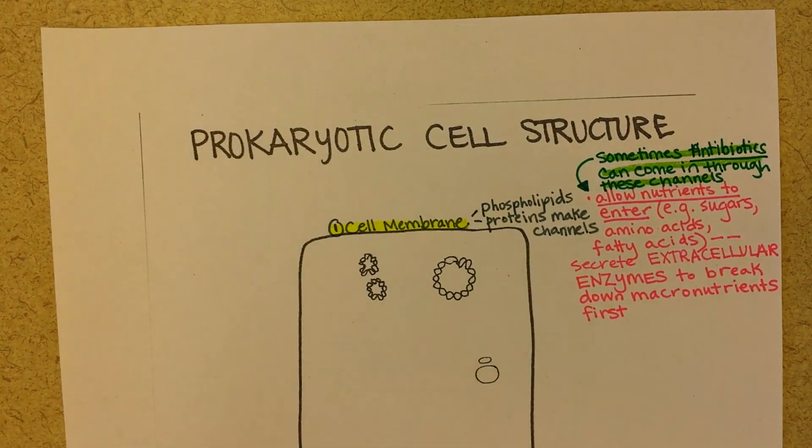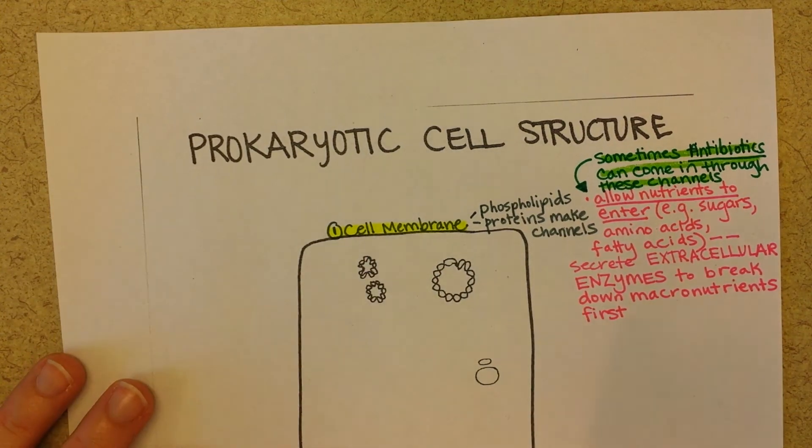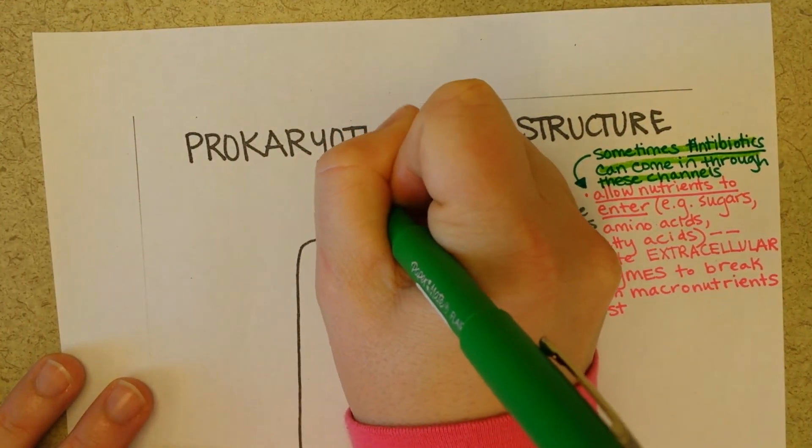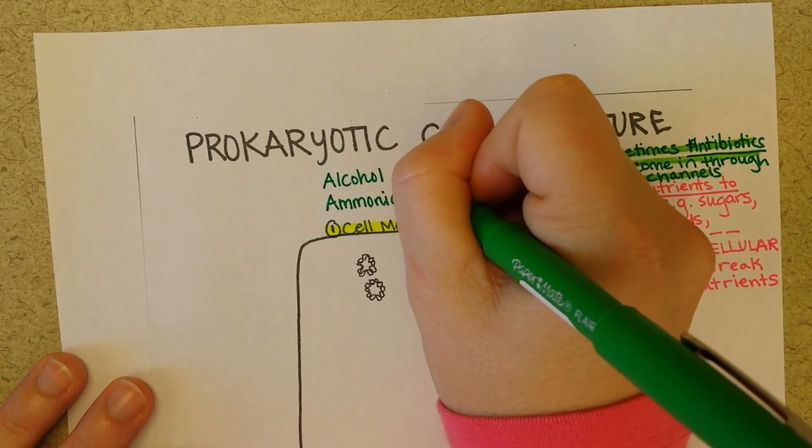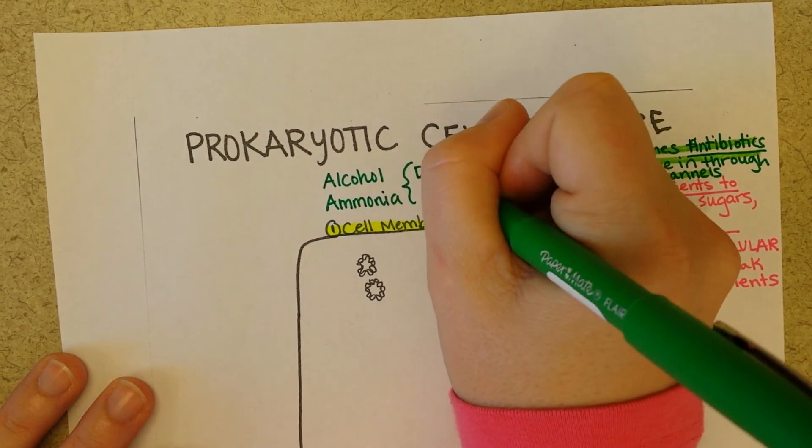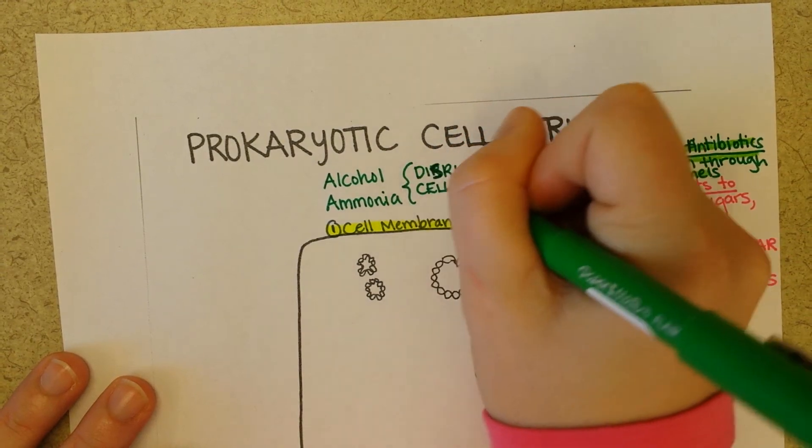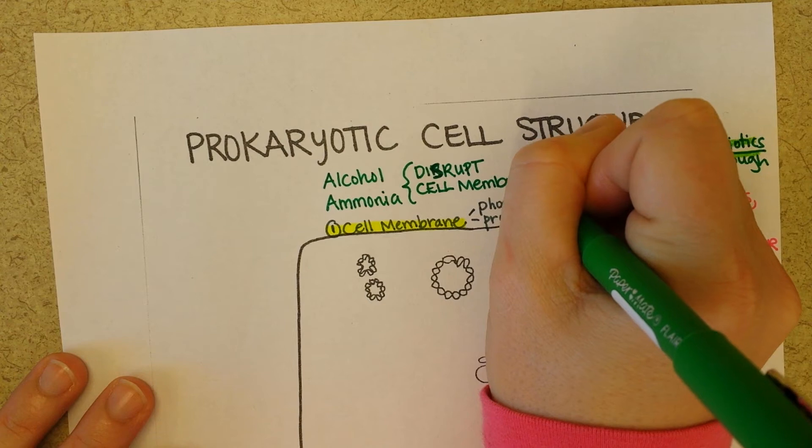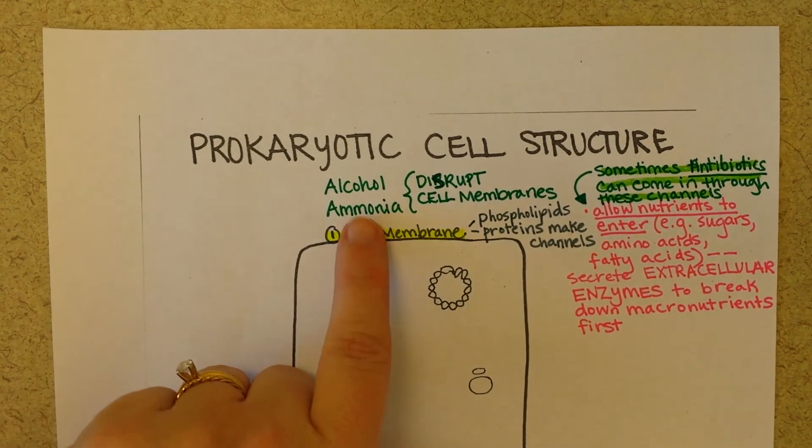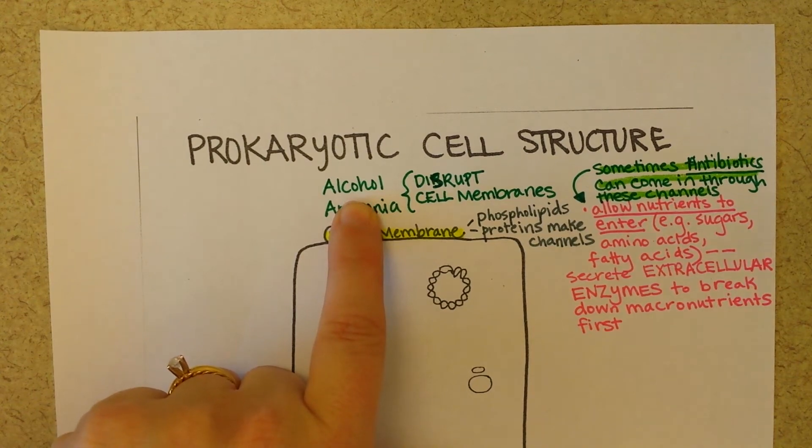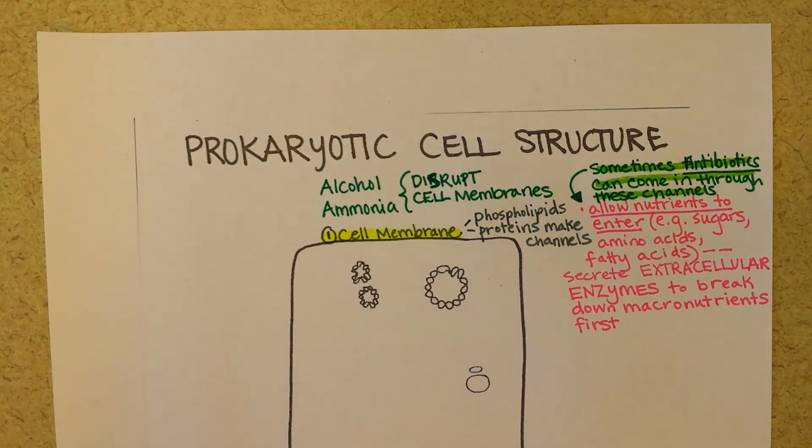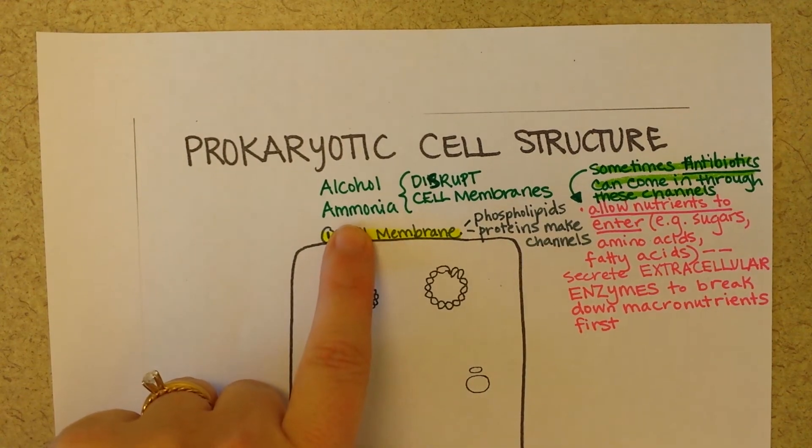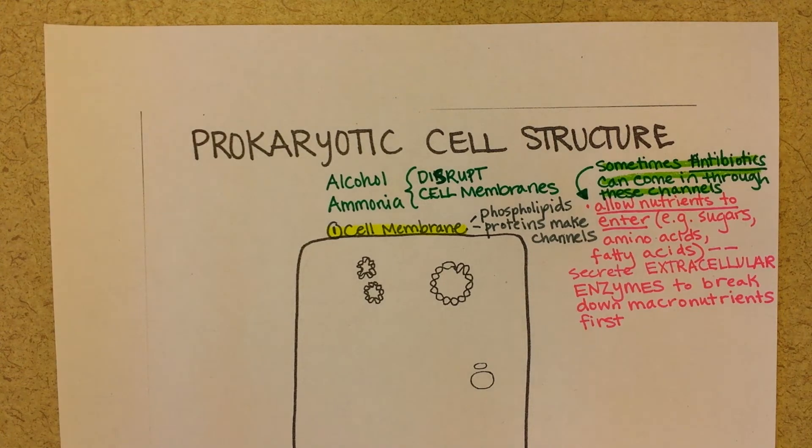Then another way that we can work against bacteria at the level of the cell membrane is with things like alcohol and ammonia. They disrupt cell membranes. So we'll use green again. They disrupt. And so that's why you're always going to be hard pressed to find something that's a better disinfectant than alcohol. And ammonia is also a very good cleaner. And in fact, in hospitals, I think they use lots of, I think they're called quaternary ammonias. And those are common cleaning agents in hospital-like settings. Because they disrupt cell membranes.